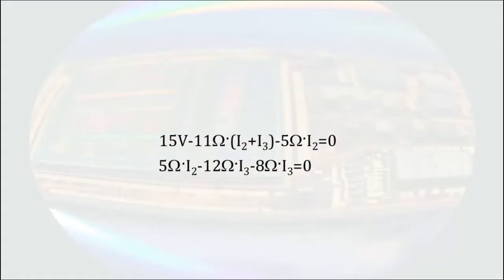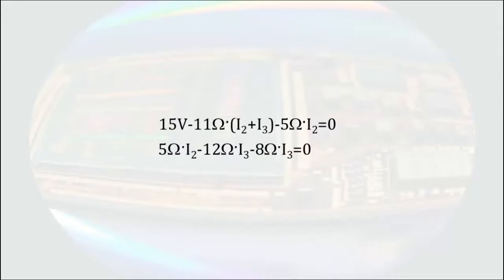We can then combine like terms. Distributing the 11 ohms and combining the 11 ohms I2 and the 5 ohms I2 results in this equation. If we combine the 12 ohms I3 and the 8 ohms I3 in the second equation, we get this.